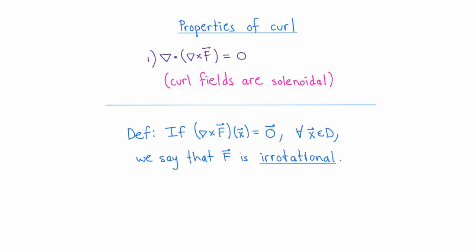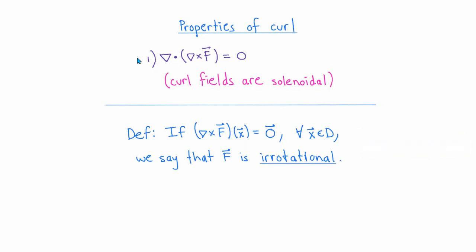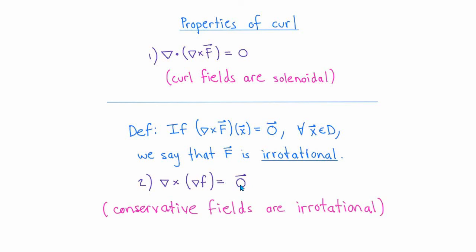A vector field F in R3 whose curl is the zero vector field is called irrotational — the net spin about every point is zero. Irrotational is to the curl operator what solenoidal is to the divergence operator. The second key property of the curl is that if you take the gradient of a scalar field and compute its curl, you always get the zero vector field. In other words, conservative vector fields are irrotational.